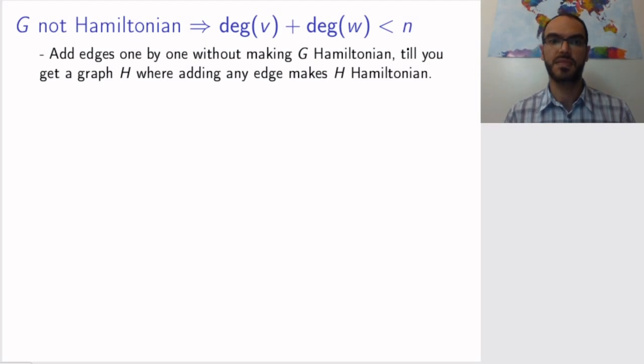How do we do this? Start with the graph G and add edges one by one without making the graph Hamiltonian, until you get a graph H where you can't do this anymore. I'm not claiming this H is unique, but if you keep adding edges to the graph, at some point whichever edge you add will make the graph Hamiltonian. If not, you add the edge that will not make it Hamiltonian and carry on until you get to this position. Now we have a graph H which is one edge short of being Hamiltonian - whichever edge will make it Hamiltonian.